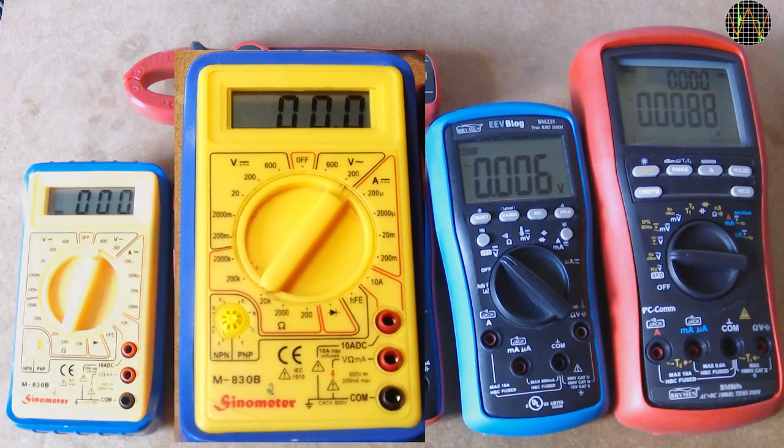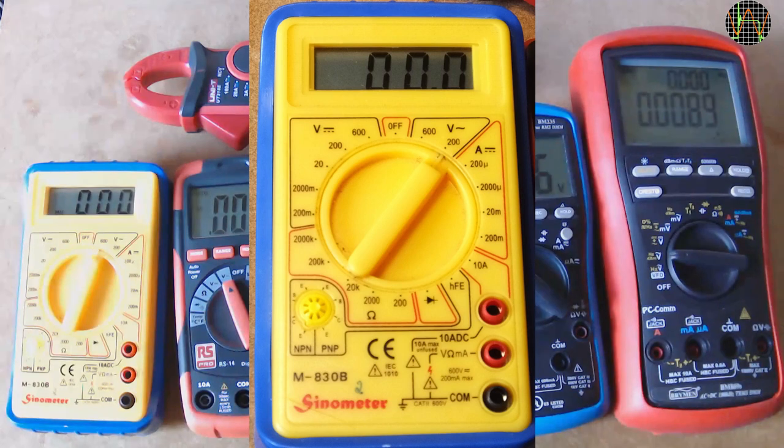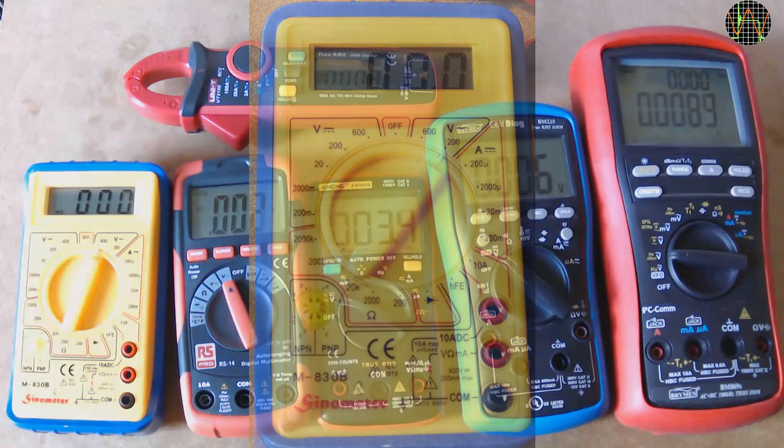The aptly named Sinometer? No, not true RMS. And another giveaway is the presence of just 200 and 600V AC range and no AC current. This meter is many years old and I believe I got it from a bargain basket at Maplin for around £5. I grabbed two and to keep them apart, I wrote a small number on it. This is number 2, number 1 lives in the boot of my car.